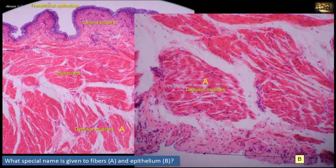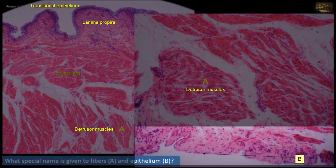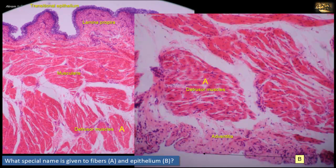The third and outermost layer in the wall of the urinary bladder is shown in the photomicrograph on the right. It is the adventitia, formed of loose connective tissue containing collagen fibers, fibroblasts, and blood vessels. In this section, the adventitia has an additional layer of flat epithelial cells called mesothelium, seen only where the urinary bladder is covered by peritoneum. Keep in mind that in all serous membranes — such as the peritoneum, pericardium, or pleura — the mesothelium secretes fluid and reduces friction between adjacent structures.